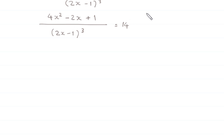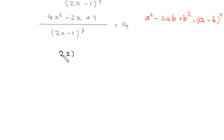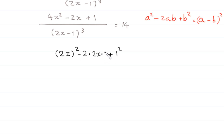We want to make the numerator a perfect square. Using the algebraic identity a² - 2ab + b² = (a - b)², we write 4x² as (2x)² and plus 1 as 1². Then negative 2ab becomes negative 2 times 2x times 1.